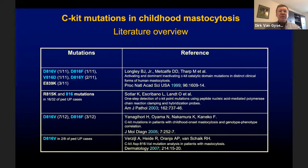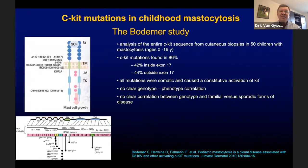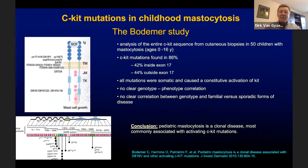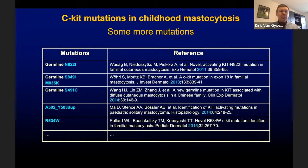Until recently, CKIT mutations were found only in a minority of children with mastocytosis, and most studies focused only on codon 816. In 2010, Christine Bodemer and colleagues analyzed the entire CKIT sequence from cutaneous biopsies in 50 children with mastocytosis. They found CKIT mutations in 86% — 42% inside exon 17, and 44% outside exon 17 — concluding that pediatric mastocytosis is a clonal disease most commonly associated with activating CKIT mutations. The search for new mutations continues, and germline mutations have also been found in childhood mastocytosis.